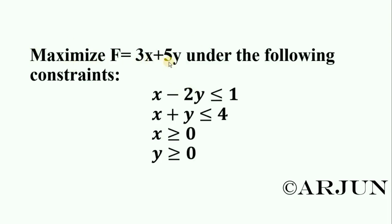Maximize f equals 3x plus 5y under the following constraints: x minus 2y is less than or equal to 1, x plus y is less than or equal to 4, x is greater than or equal to 0, and y is greater than or equal to 0.